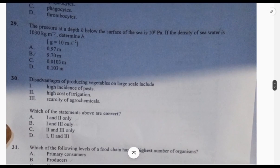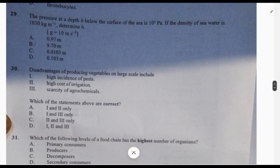Question 30: disadvantages of producing vegetables on large scale include high incidence of pests - very true, high cost of irrigation - very true, scarcity of agrochemicals - no, because you can use natural fertilizer. So your answer is A. 31: which food chain level has the highest number of organisms? The highest is the producers.